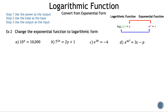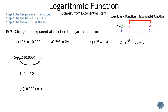Let's start with a: 10 to the x is equal to 10,000. We can remember the outputs and inputs change places when we convert. The base remains the same — in this case, 10. And our power x is the new output. Now we can place in the last number we haven't used, 10,000. Let's verify by drawing the arrow from the base to the output and setting that equal to the input. We have our given, so the log form is correct. Remember, we don't need to write down the base since it is 10.